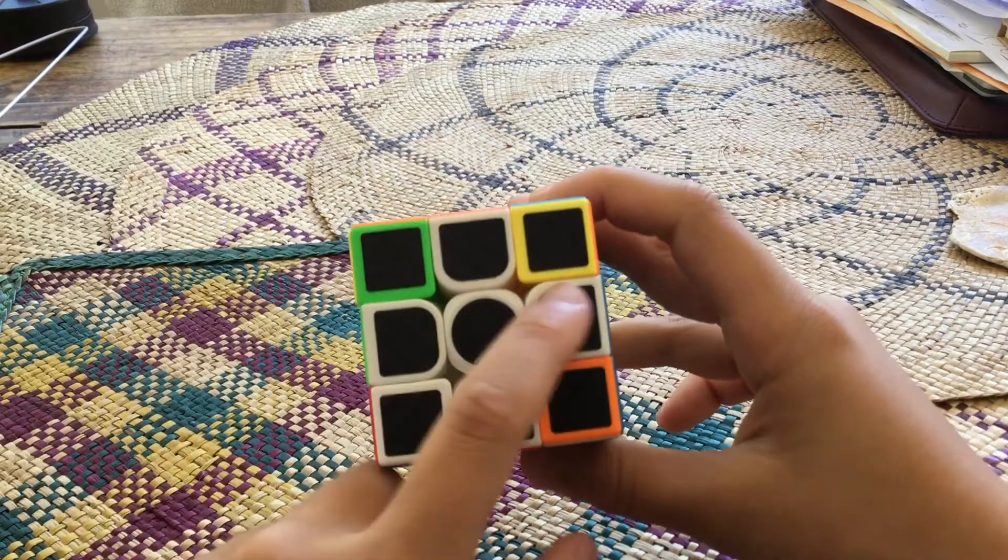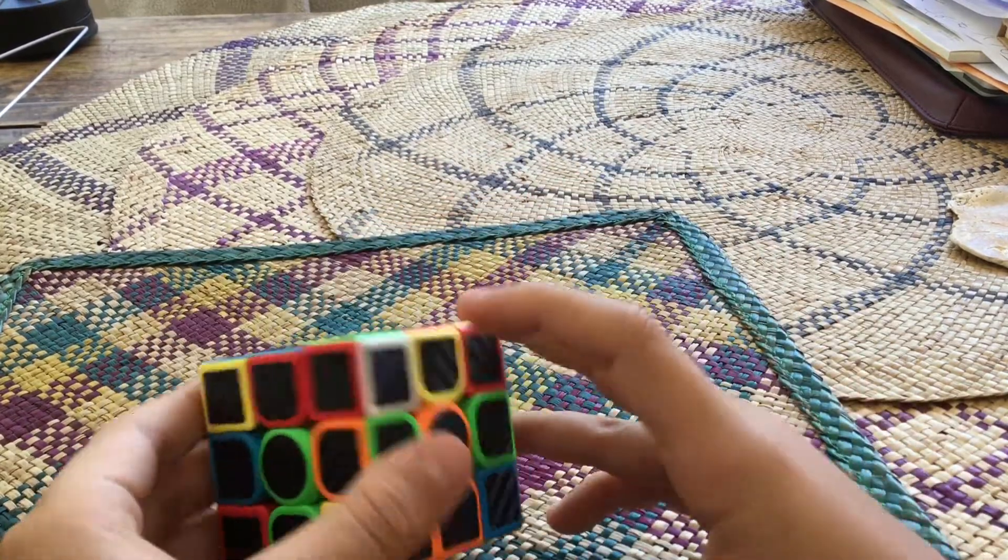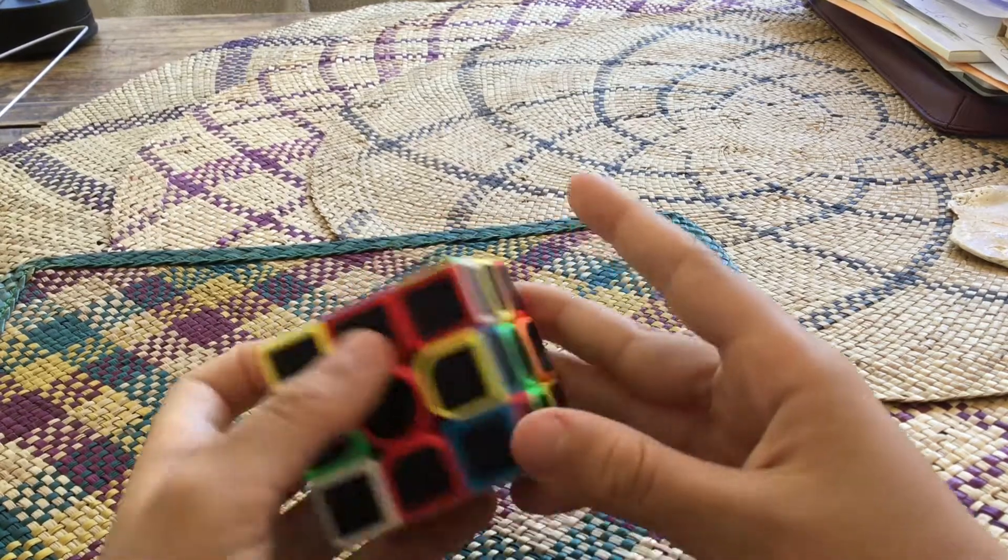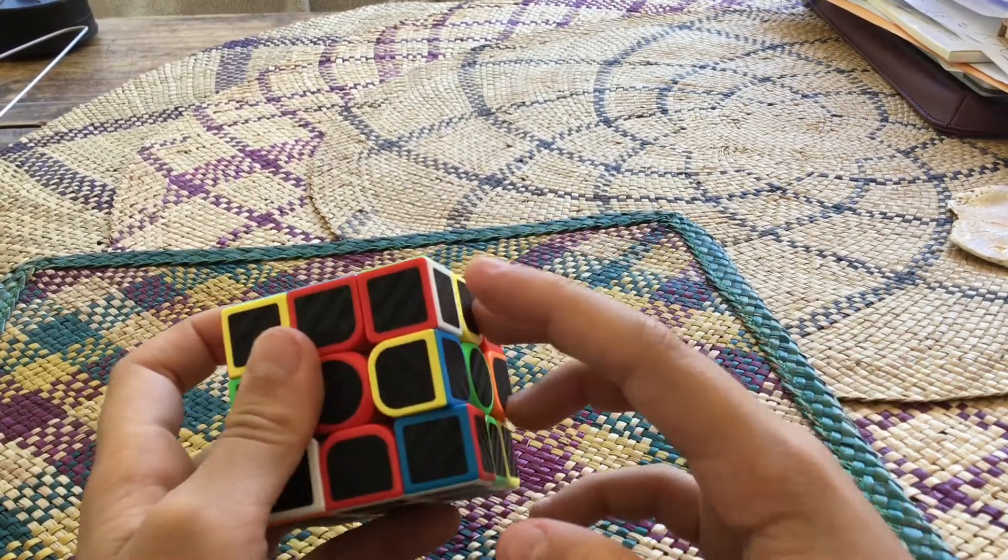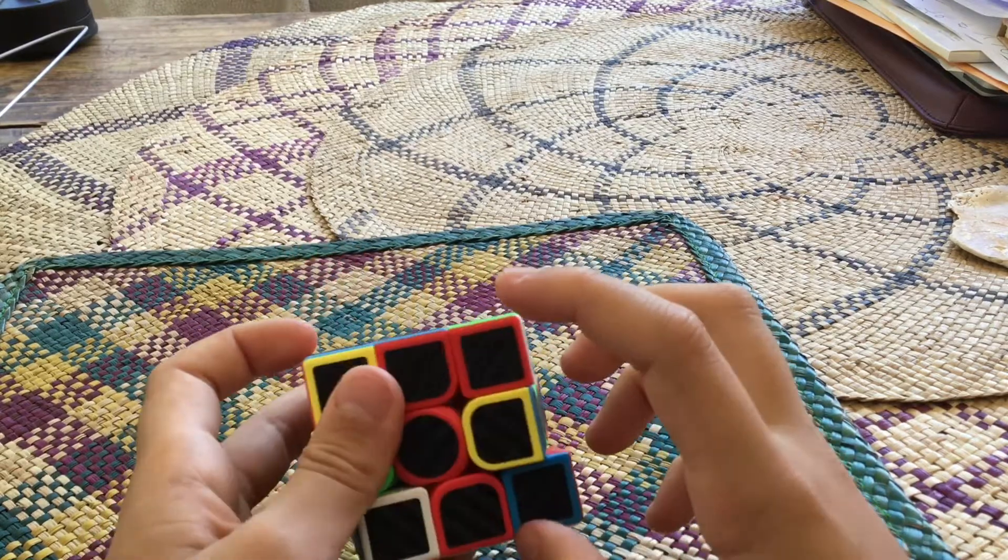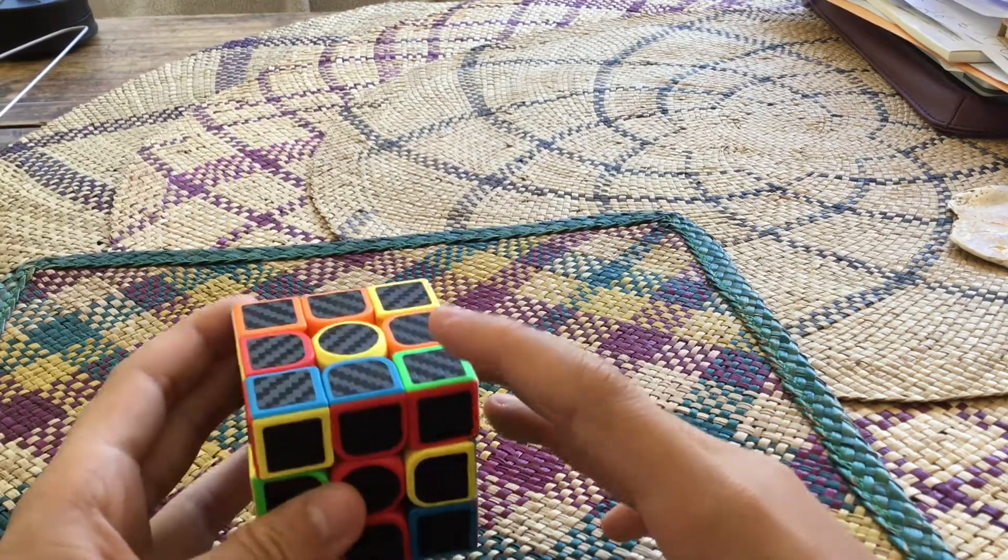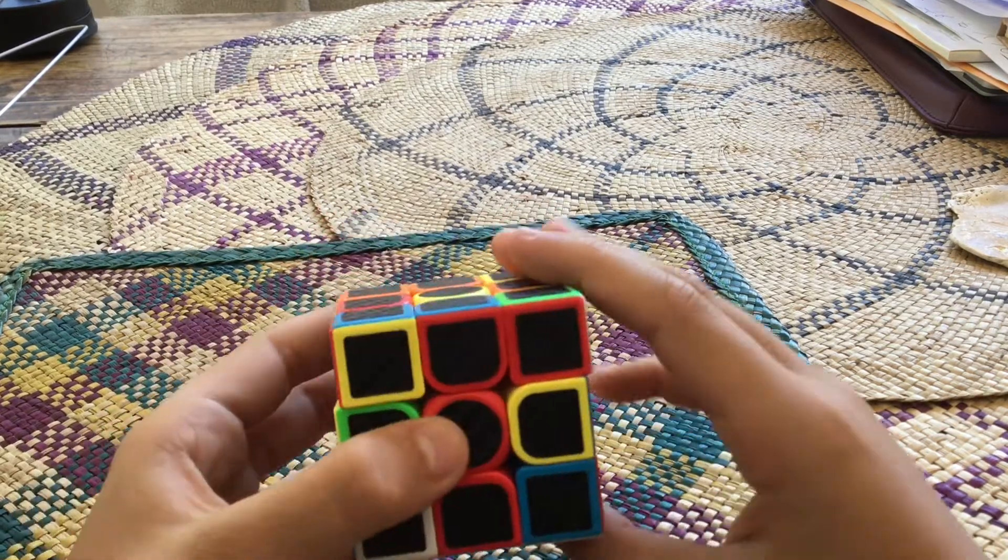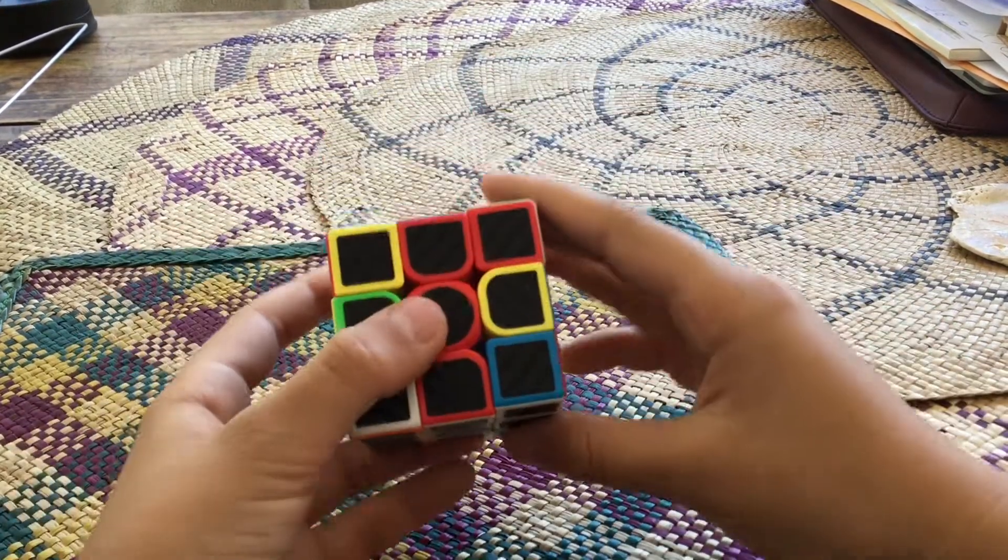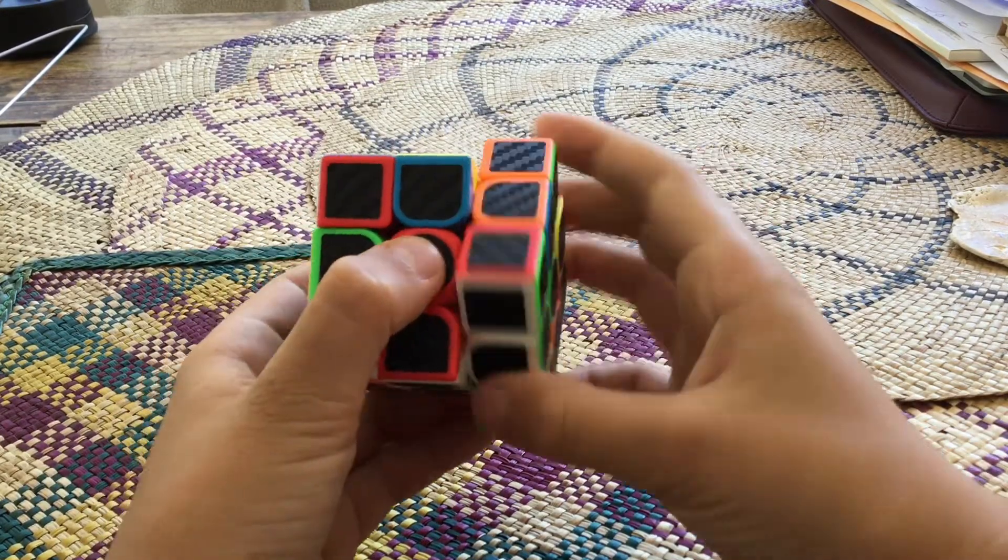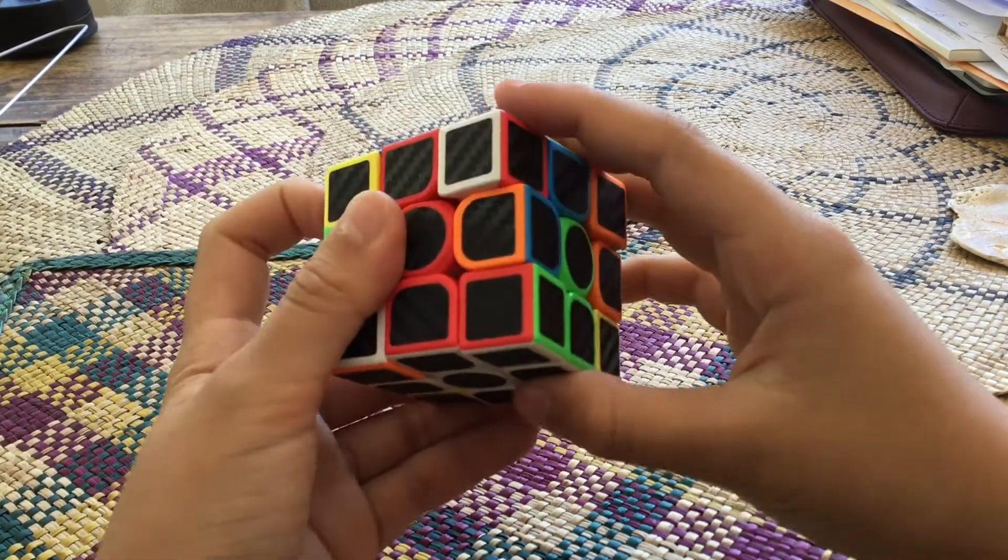When you're done, you have made the white cross. Now what you're going to do, you're going to find, see that you have to match the red corner to the red. Now you see how there's a white next to the red, there's a green. The green needs to go on the side next to the red, the red needs to go down, and the white needs to go below the red. So do this algorithm: R U R apostrophe U apostrophe.